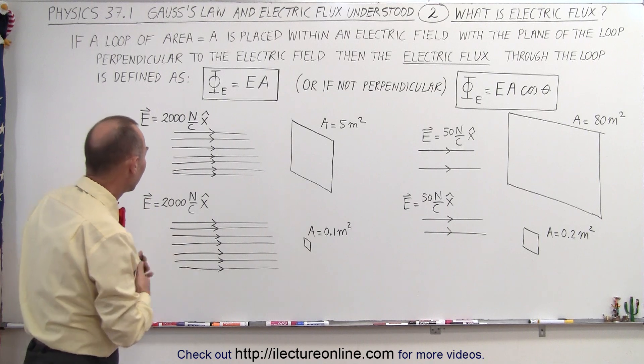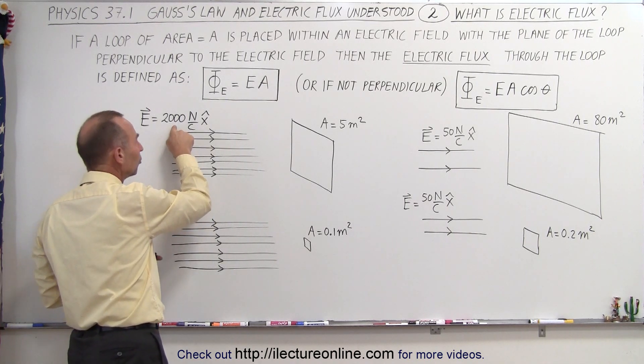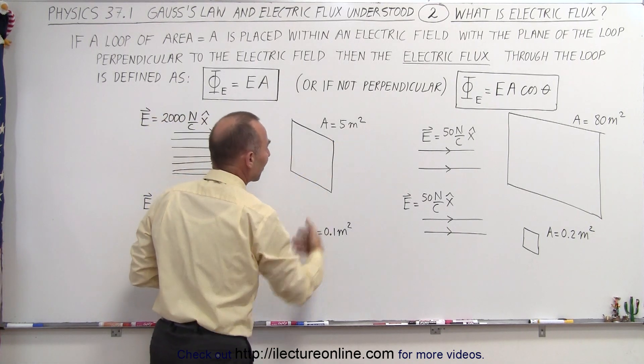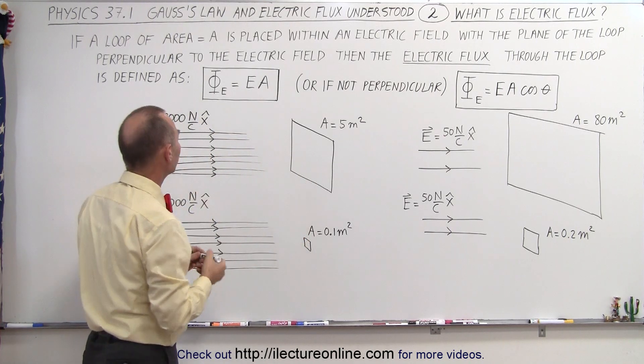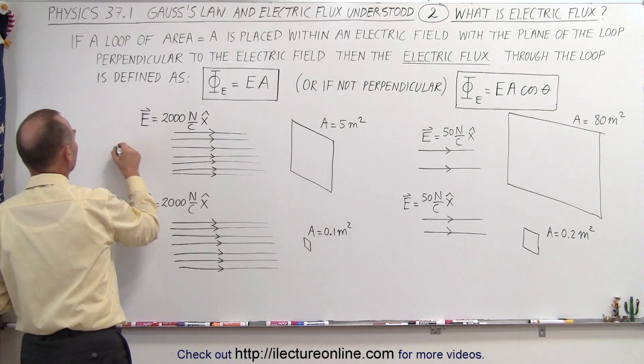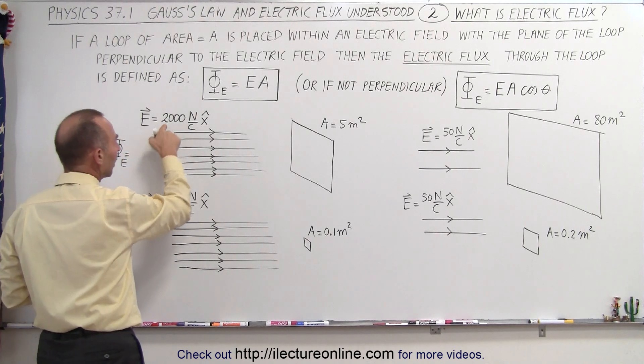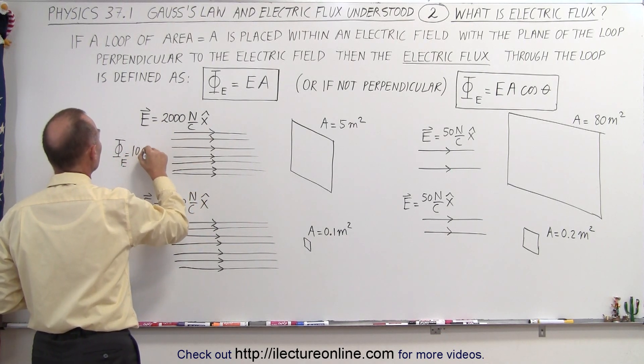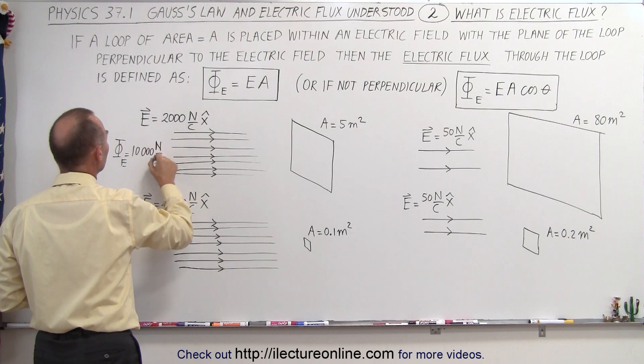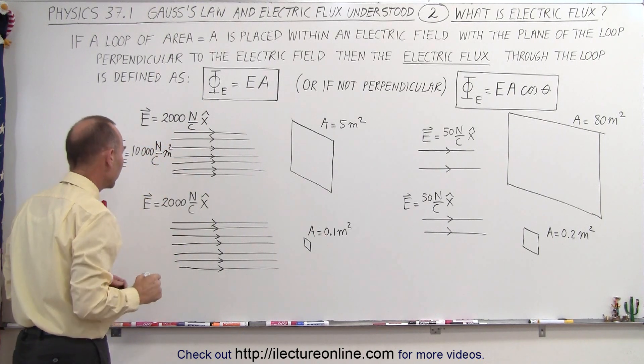So in this case, if the strength is 2,000 N per Coulomb and the area is 5 square meters, when we multiply the two together, we can say that in this case the electric flux would be equal to 2,000 times 5 or 10,000 N per Coulomb times meters squared.